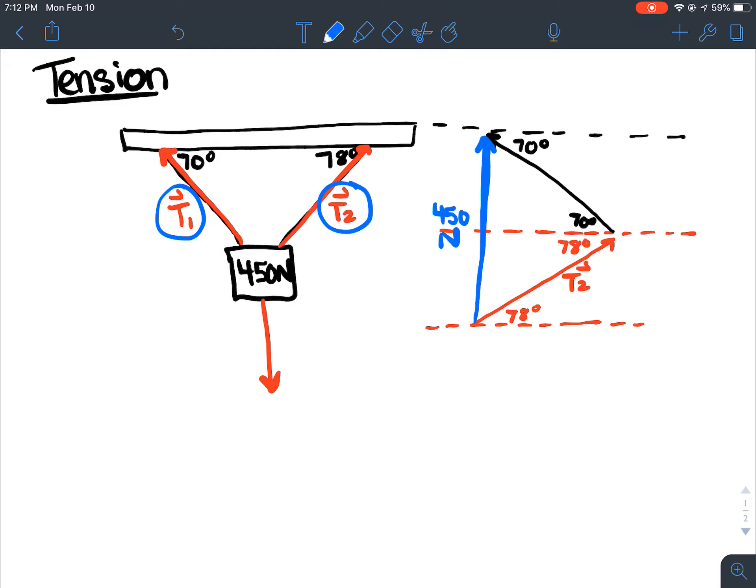When you add them up, they must exert a force directly vertical of 450 newtons, because otherwise the sign would be falling to the ground, right? It would be getting lower and lower and lower. So therefore, when you add those two tensions together, they must be pulling upwards with the same force that's being pulled downwards, so that way the sign doesn't move. So that's why I'm drawing my vector up to this guy.